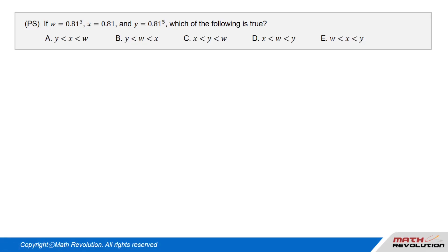Question. If W equals 0.81 cubed, X equals 0.81, and Y equals 0.81 to the power of 5, which of the following is true?